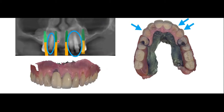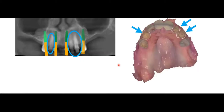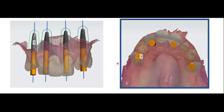First appointment: one hour to prepare the cuspid, lateral, and contralateral cuspid, place provisional restorations on them, and take an intraoral surface scan and cone beam CT. The patient then goes home. We take those two data sets, merge them, and perform surgical planning for four implants — second premolar, lateral, central incisor, and second premolar positions. We can see the three prepared teeth in the merged data set.